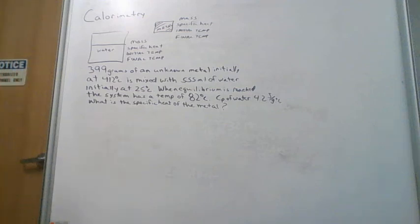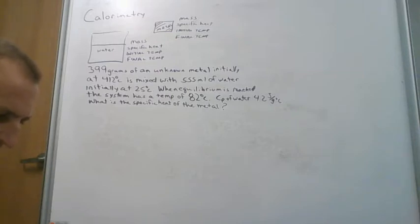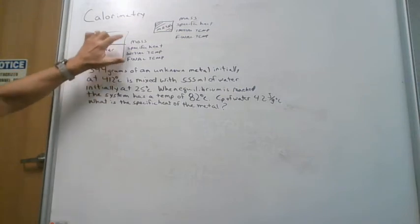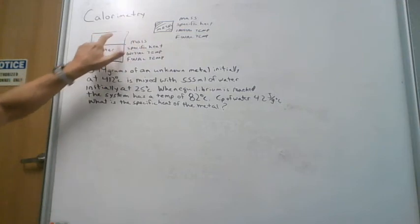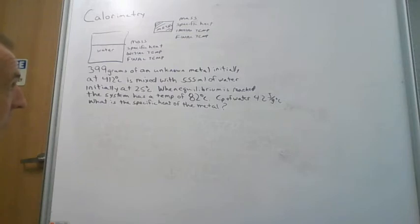Let's look at a calorimetry problem now. A calorimeter is a device that maintains the heat inside of it, so no heat is lost to the environment. For example, if we have an insulated cup that has some water in it and we drop a heated piece of metal into it, all of the heat lost by the metal will be absorbed by the water and none will be lost to the system.